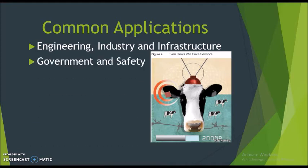Government and safety: IoT applied to government and safety allows improved law enforcement, defense, city planning, and economic management. The technology fills in current gaps, corrects many current flaws, and expands the reach of these efforts. For example, IoT can help city planners get a clear view of the impact of their design and give governments a better idea of the local economy.